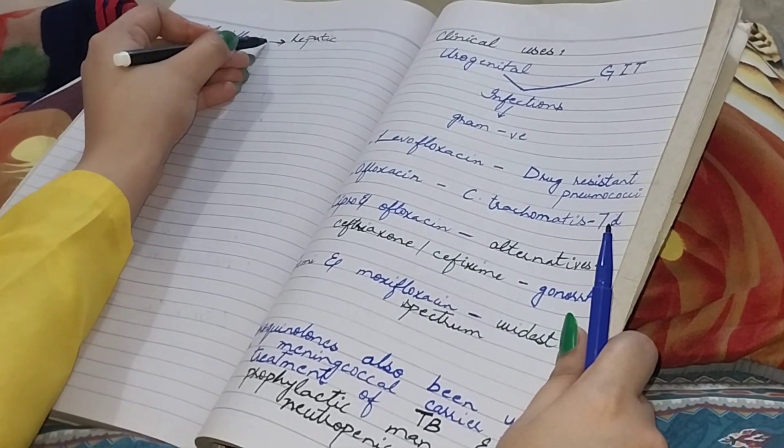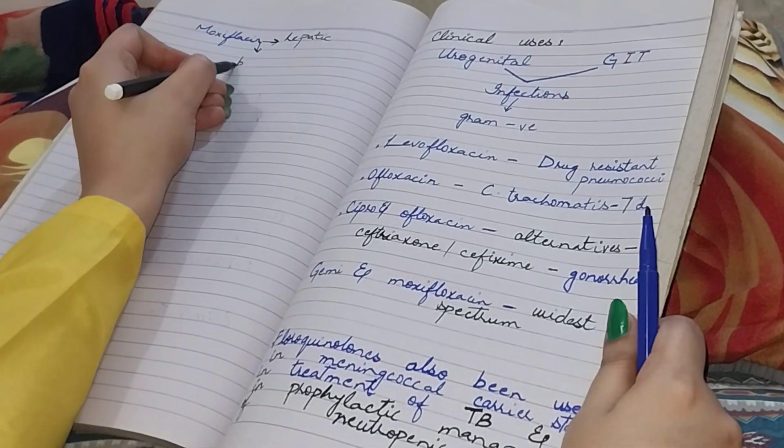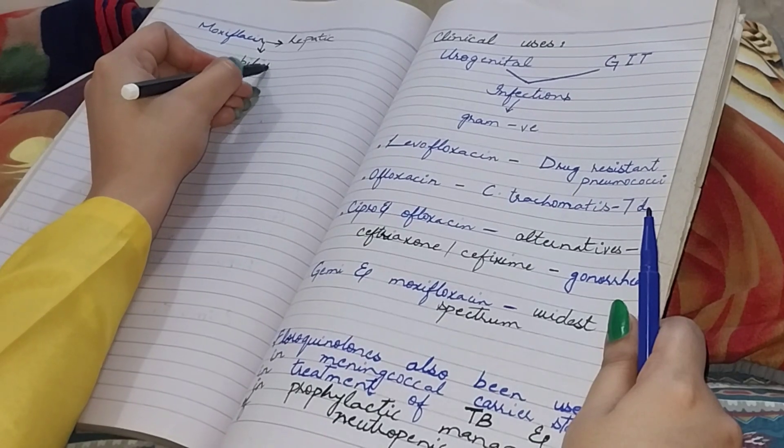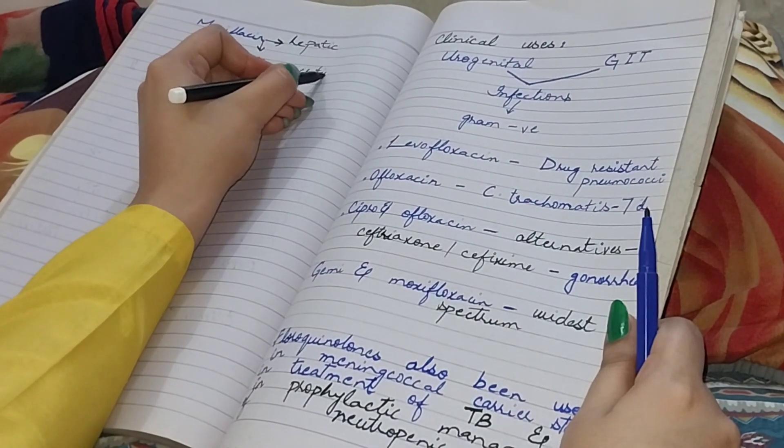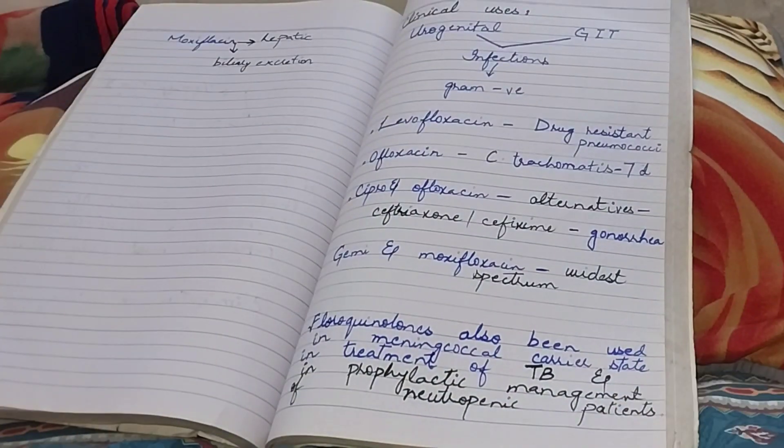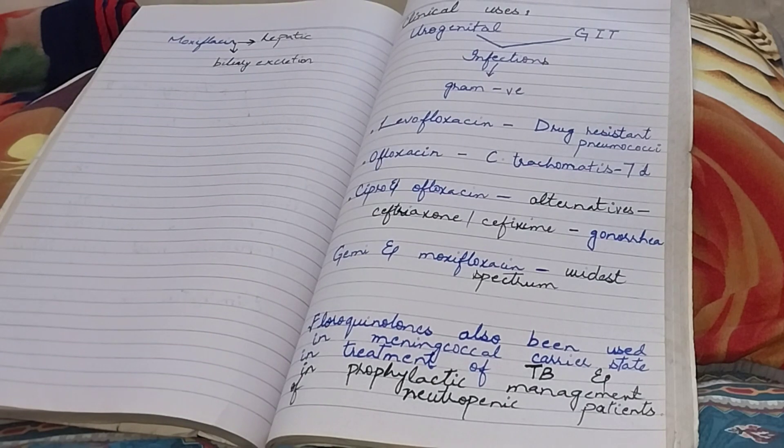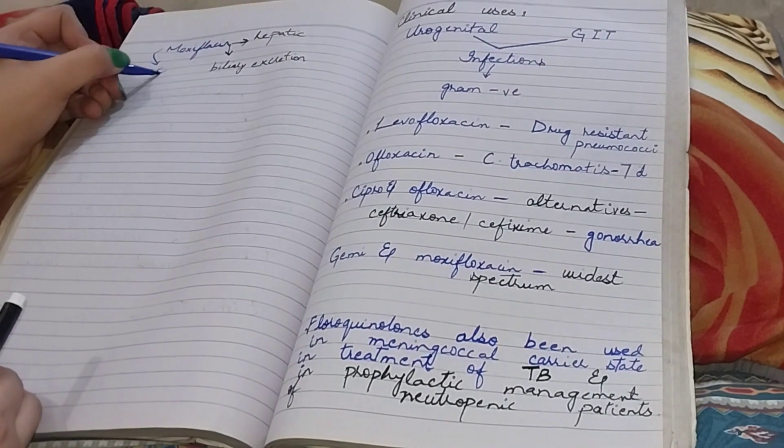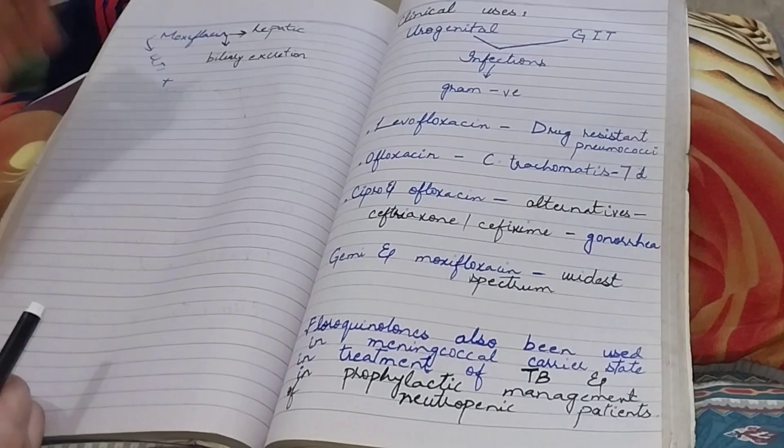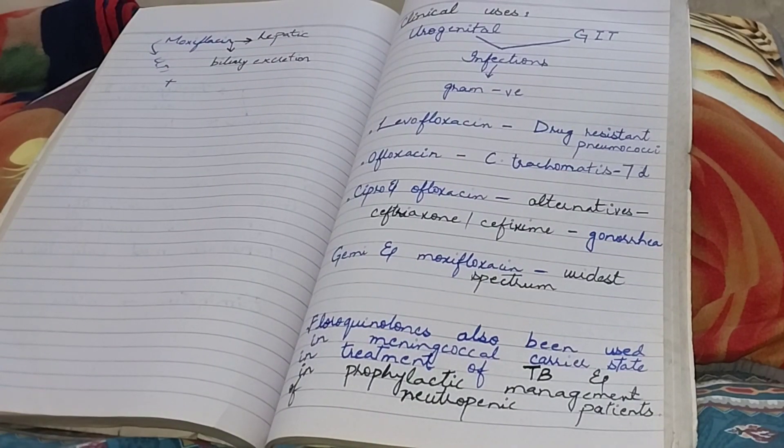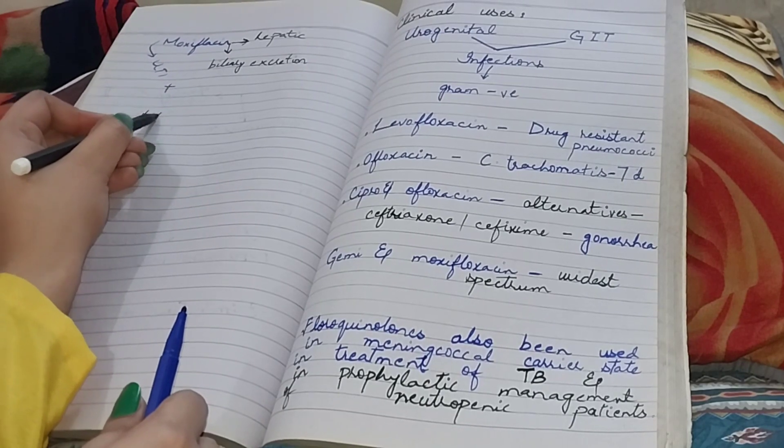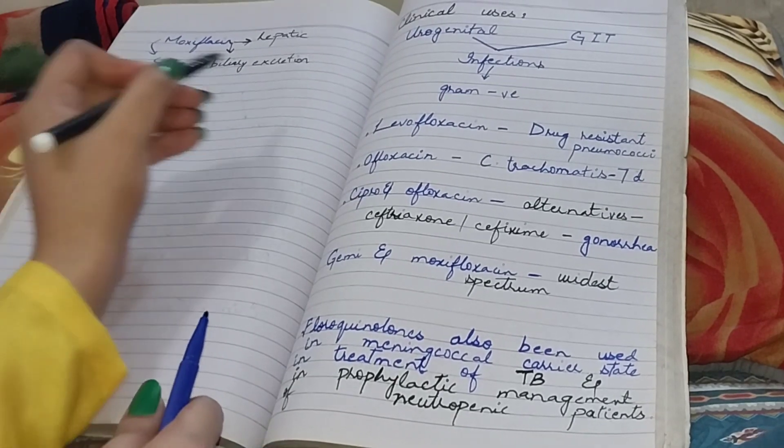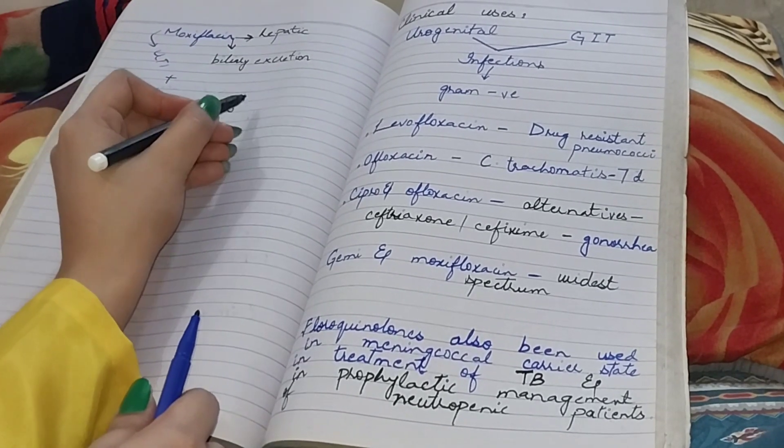And by biliary excretion. Remember one more thing, use of moxifloxacin in UTIs is not recommended. Half-lives of fluoroquinolones are usually in range of three to eight hours.